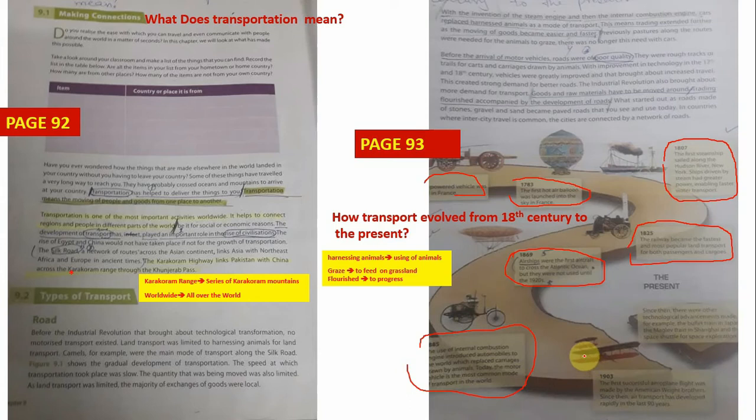In 1903 the first successful airplane flight was made by the American brothers and their name were Wright brothers. They have become very famous for this invention. As you know, air traveling is the most comfortable and fastest means of communication nowadays. And this is the present time in which we are living. There are many new technologies introduced, for example the bullet train in Japan, the maglev train in Shanghai, and the space shuttles. People are now traveling through space shuttles and go to space and discover new things in the universe.